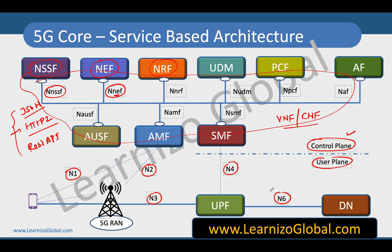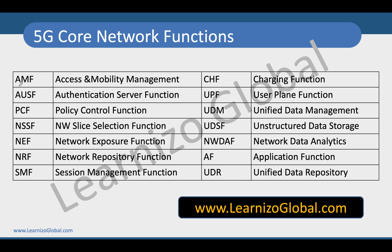In the upcoming videos, we are going to talk about all these network functions one by one and understand what their typical functionalities are. In this list we have all the network functions and their names, which includes AMF, which is access and mobility management function, AUSF, PCF, NSSF, NEF, NRF, SMF, and some alternative functions like CHF, UPF, UDM, UDSF, NWDAF, AF, and UDR. So we are going to talk about all these network functions in the upcoming videos.